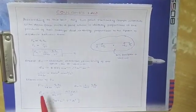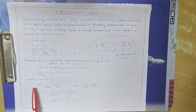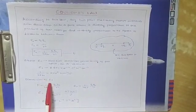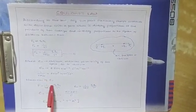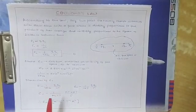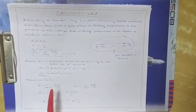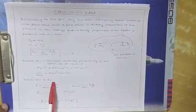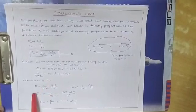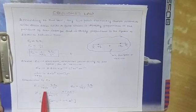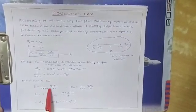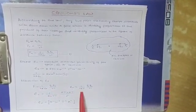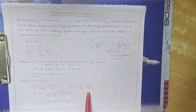Now I will find the dimension of this new physical quantity ε₀. As discussed in class 11, whenever you come across a new physical quantity you should find its dimension. From F = (1/4πε₀) · Q1Q2 / R², we get 1/4πε₀ = F · R² / (Q1 · Q2).